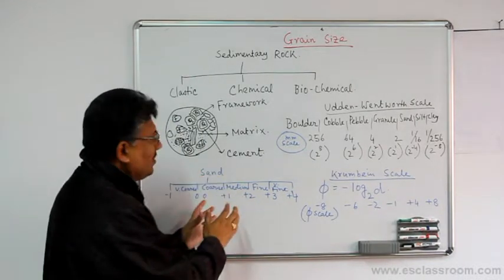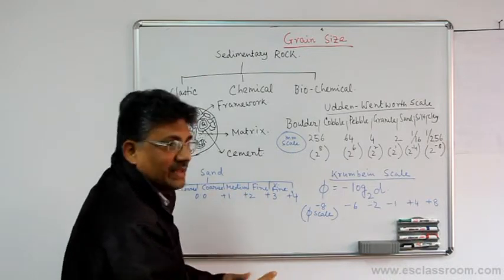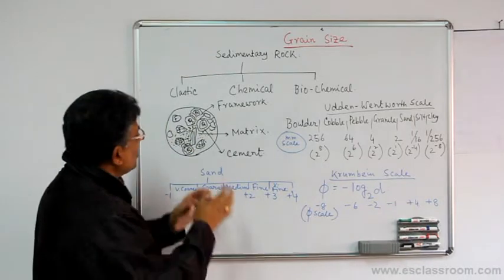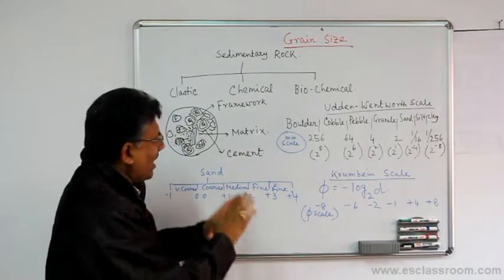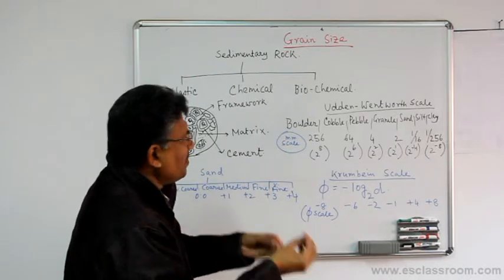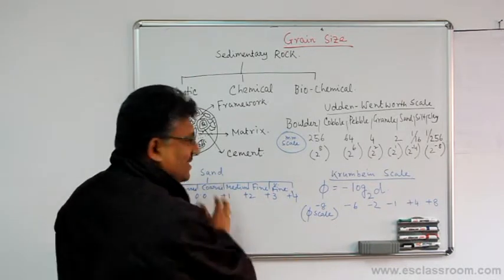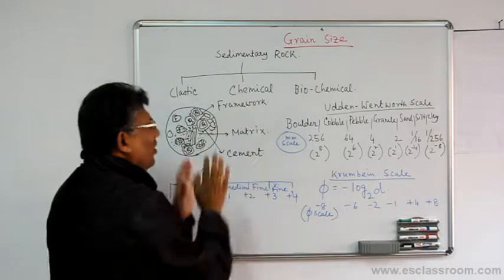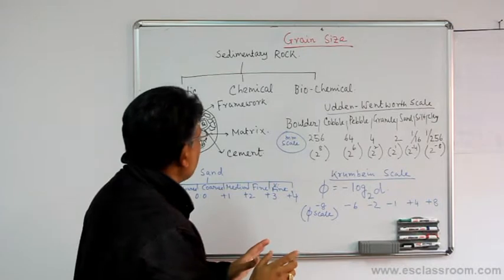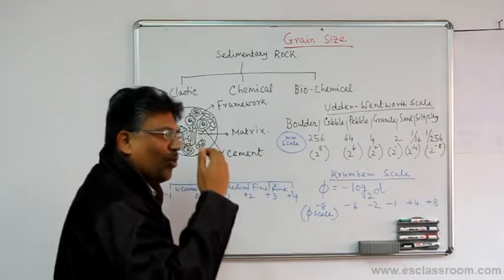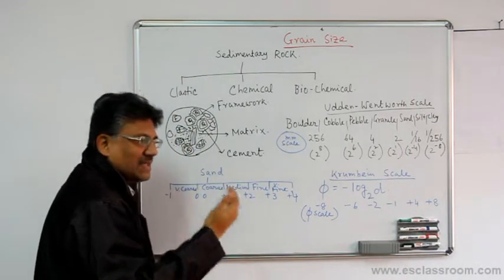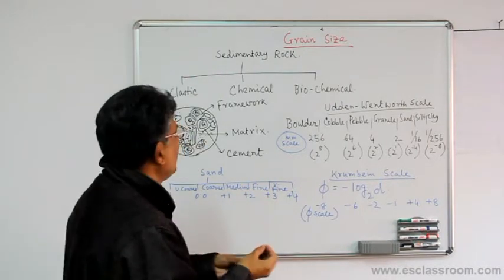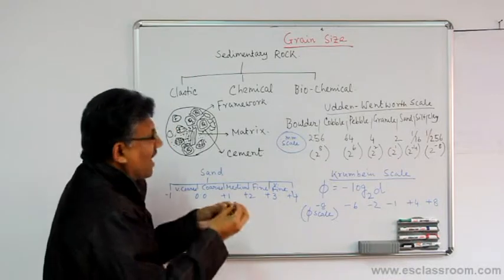Clastic sedimentary rocks include conglomerate, sandstone, shale, and volcanic clastic rocks — all rocks which are eroded, transported, and deposited with a fragmentary texture. The chemical rocks are those formed by chemical processes such as water column Eh-pH conditions that control deposition, such as limestone, phosphorite, and iron formation.